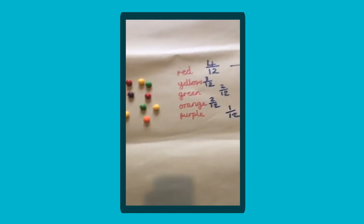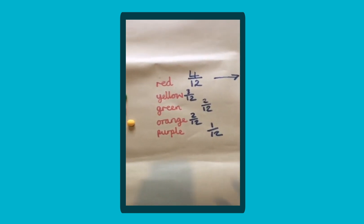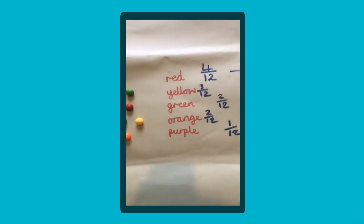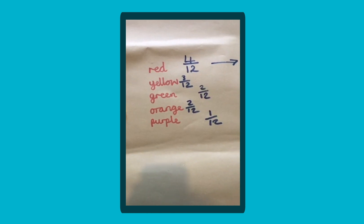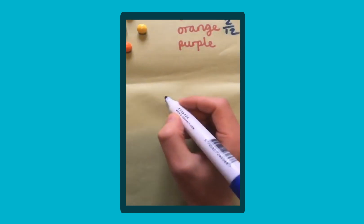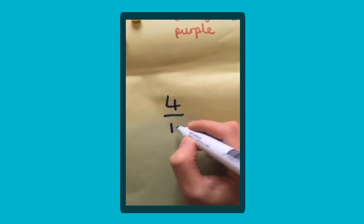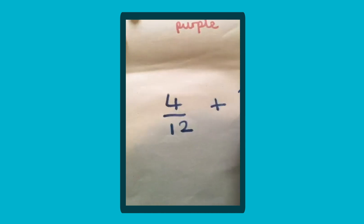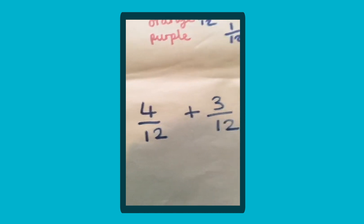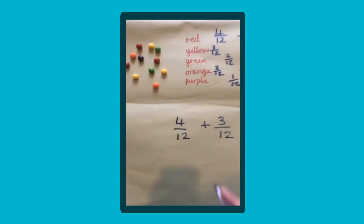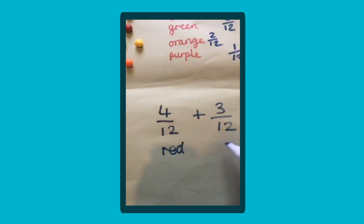Also you could add some of the fractions. So for instance, we've got red and yellow. Lower key stage two, so year three and year four, they would be adding fractions, so we'd have four twelfths add three twelfths. So this is year three and year four, and when you're adding fractions, this is red and this is yellow.